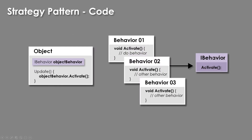So what this might look like in code is you'd have an interface or some sort of abstraction that defines a method that all things need to have commonly. Then we'll have a set of different behaviors — each one will be slightly different, but each one will implement that method. And then we'll have our object that stores whatever the current behavior is and then runs it. So maybe inside of update, we'll update whatever the behavior is, and we can swap it out and do a different one.